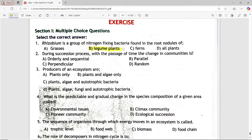Next MCQ is, during succession process with the passage of time, the change in communities is. Options are orderly and sequential, parallel, perpendicular, random. Answer is option a, orderly and sequential.